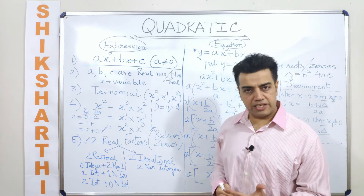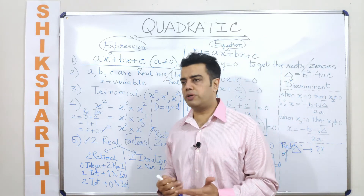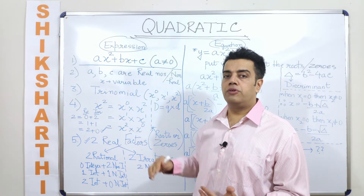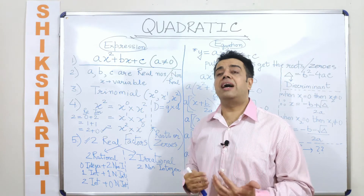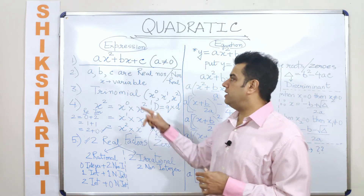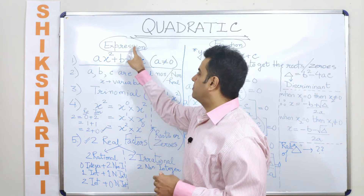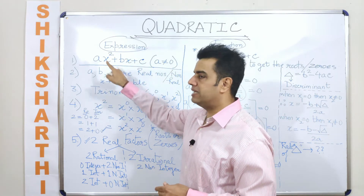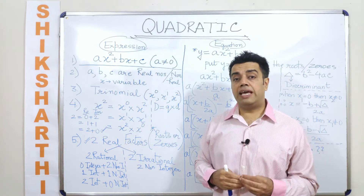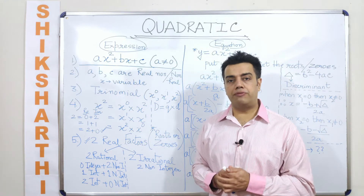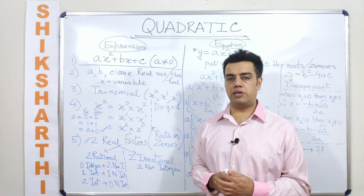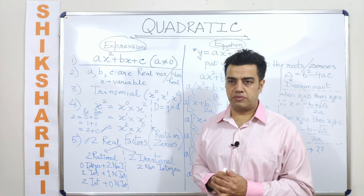Now the moment I say it is a linear expression, that means the highest power of the variable here is one. Similarly, if I am writing an expression in which the highest exponent value of the variable used is two, it becomes a quadratic expression.